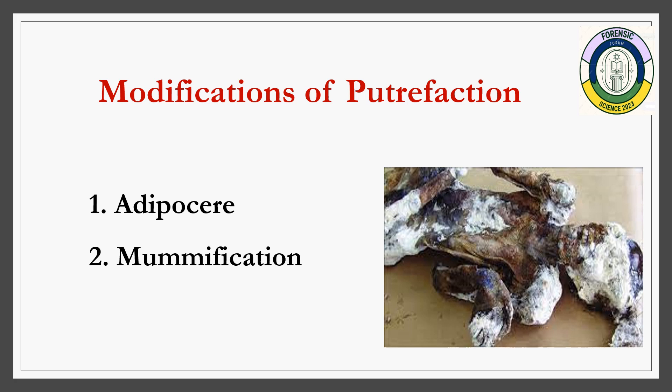Mummification occurs when the skin becomes brittle, contracted, dried, firm, leather-like, and shrunken, turning brown to black in color. Conditions required are a hot and dry environment. Both adipocere formation and mummification can be observed simultaneously, as shown in the image.